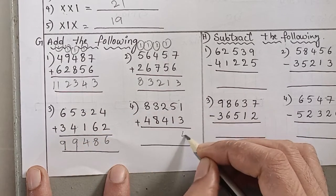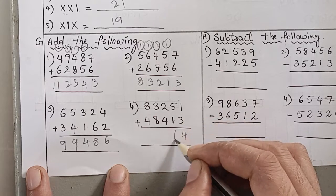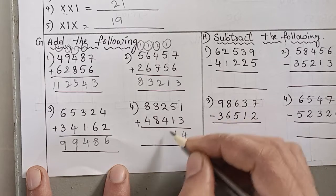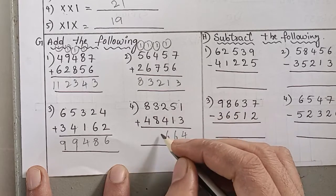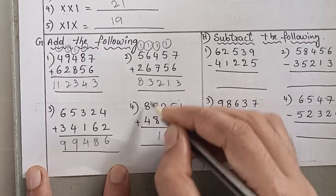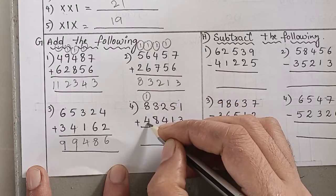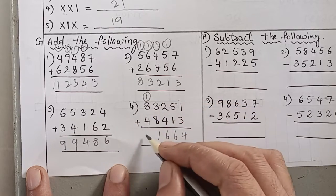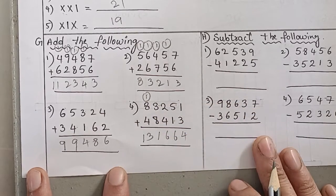Fourth addition: one plus three is four. Five plus one is six. Two plus four is six. Eight plus three is eleven, carry one. Eight plus four is twelve, twelve plus carry one is thirteen.